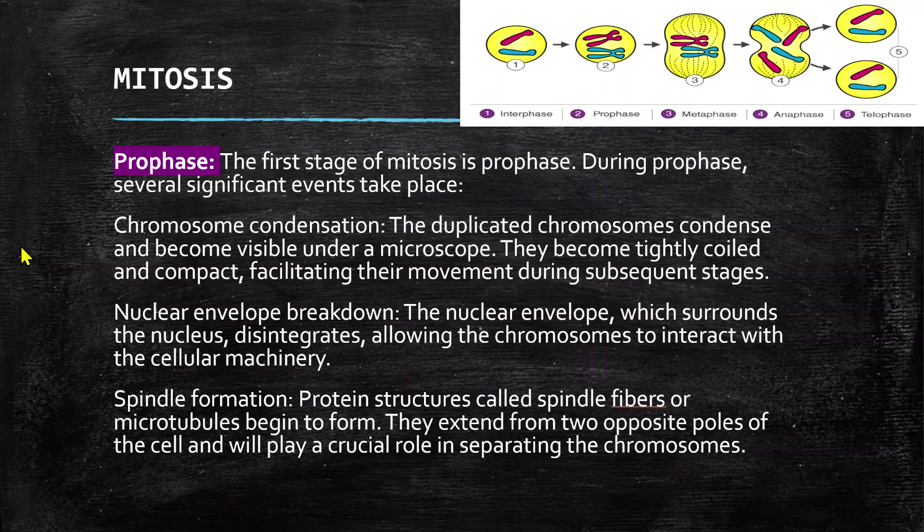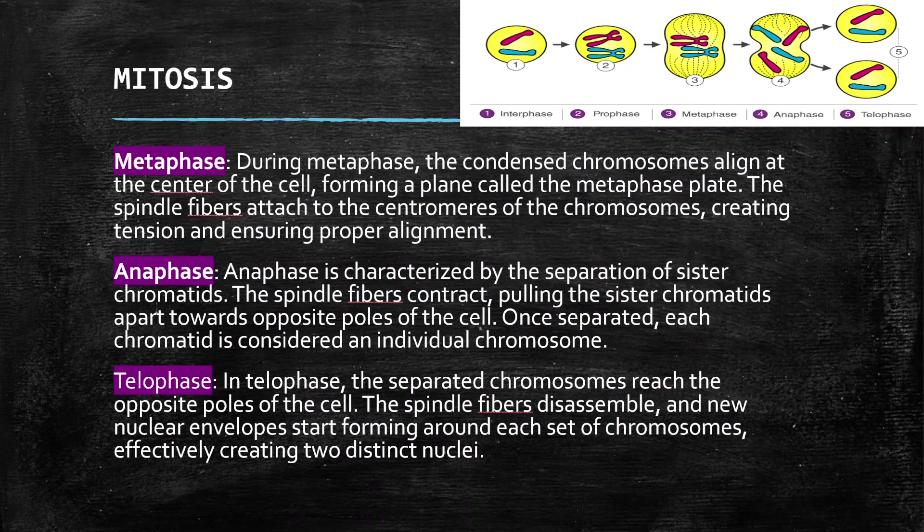Then, nuclear envelope breakdown occurs — the nuclear envelope, which surrounds the nucleus, disintegrates, allowing the chromosomes to interact with the cellular machinery. Next, spindle formation begins: protein structures called spindle fibers, or microtubules, start to form. They extend from two opposite poles of the cell and will play a crucial role in separating the chromosomes, as you can see from the image.